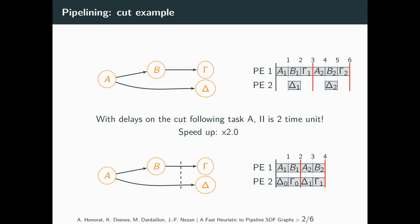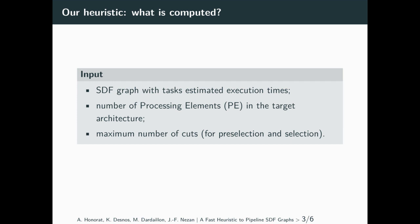To compute automatically such graph cuts where to add delays, we need three inputs. First, an SDF graph with estimated execution times of its tasks. Then, the number of processing elements in the target architecture. And finally, the maximum number of graph cuts that the user wants. The number of graph cuts corresponds to the number of pipeline stages minus 1. Two parameters are used for this setting: one to preselect the amount of cuts balanced by workload, and the other to select the best cuts among the preselected ones.